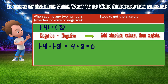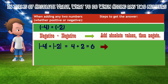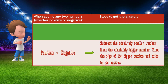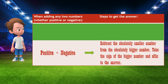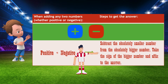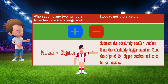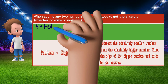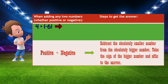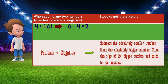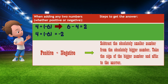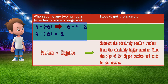The last step is to negate the answer, so 6 becomes negative 6. And negative 6 is the answer to negative 4 plus negative 2. The third case is adding a positive and a negative together. The rule is to subtract the absolutely smaller number from the absolutely larger number; then the answer takes the sign of the absolutely larger number. For example: 4 plus negative 6. Since 4 has a smaller absolute value than negative 6, we subtract 4 from 6, giving us 2. The answer is negative 2, taking the sign from negative 6.